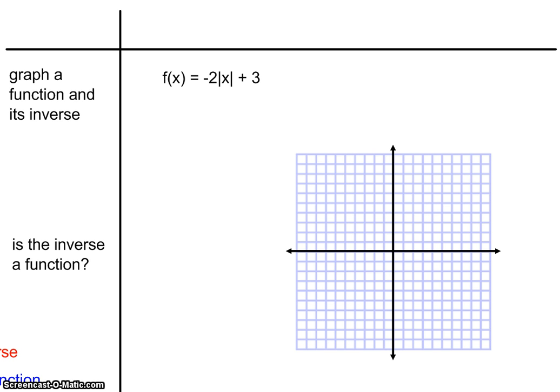So when we go and look at this graph of my parent function again, a couple things will identify our transformations. We're going to go up 3. We're going to reflect over the x-axis. And we're going to stretch it vertically by a factor of 2. So the graphing of this function shouldn't be a big issue for us. So again, what I'll do is simply move this vertex up 3.